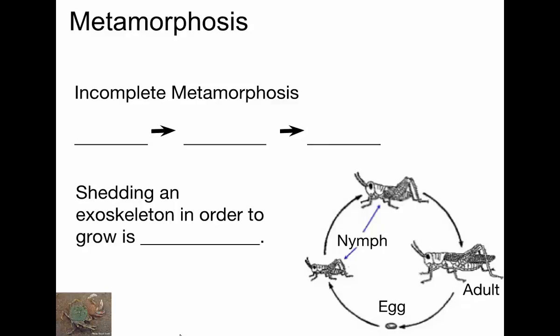Insects and other arthropods have an exoskeleton which is helpful for protection, but the problem is that once it forms around the arthropod it can't grow anymore. So in order to get larger, the arthropod has to shed that exoskeleton and grow a larger new one. But during the time when it's shed, they're vulnerable — they don't have that protective layer, so they're more exposed to predators.